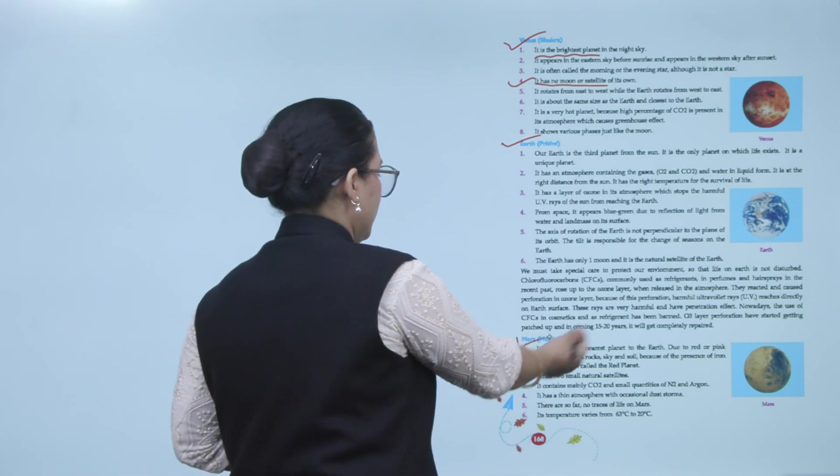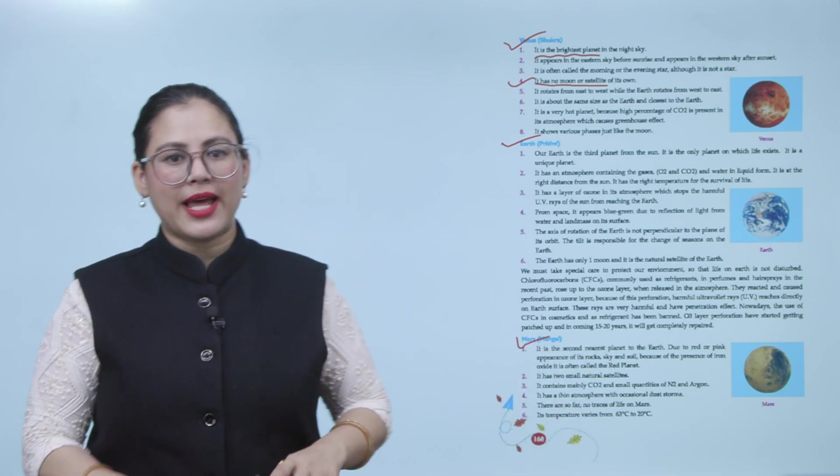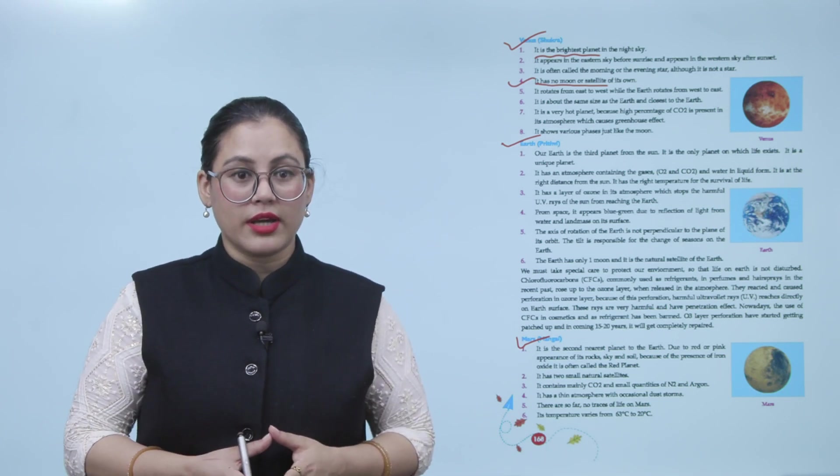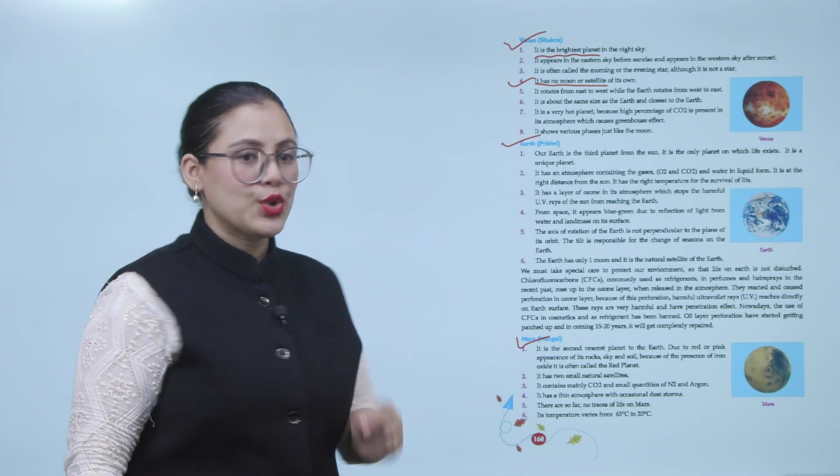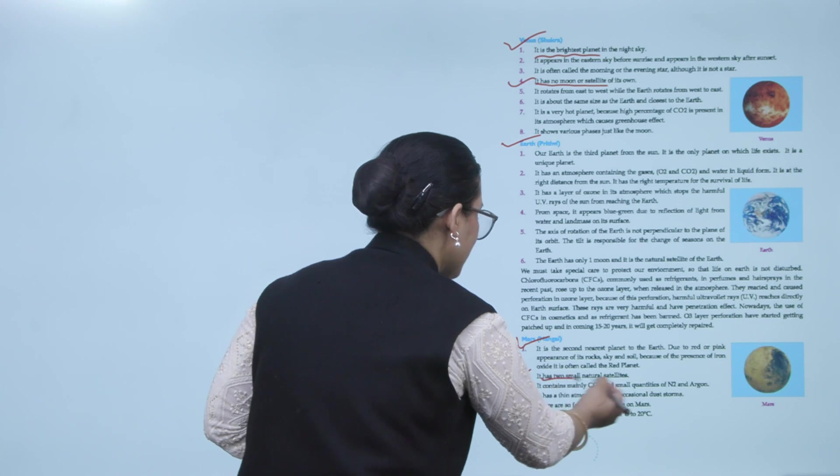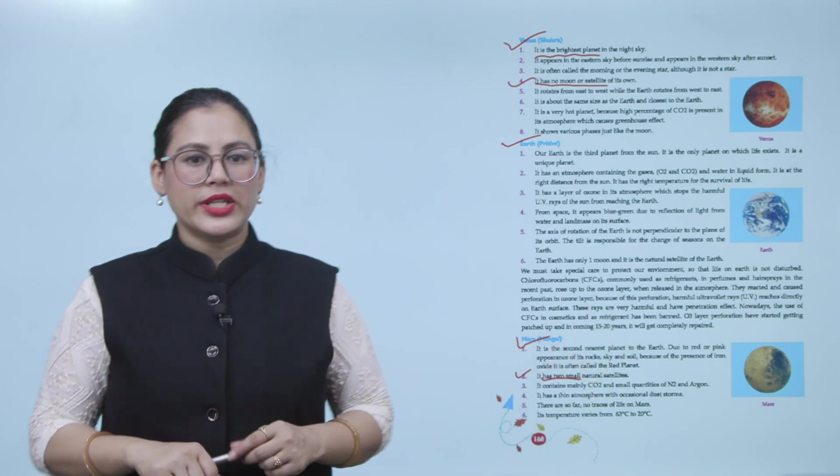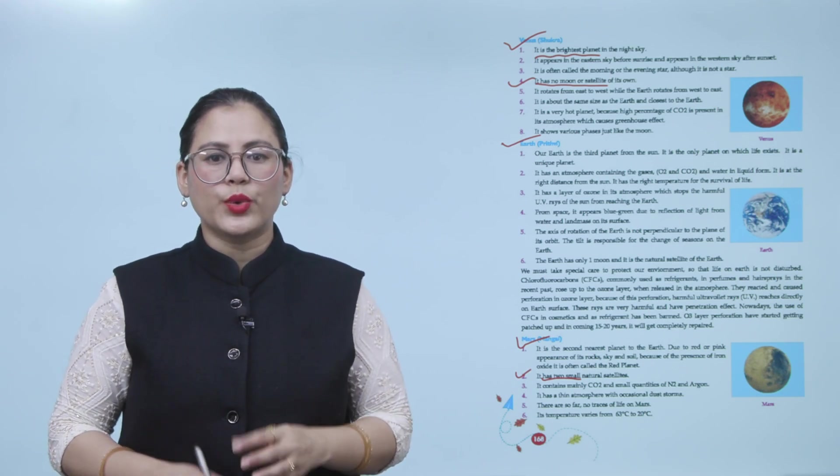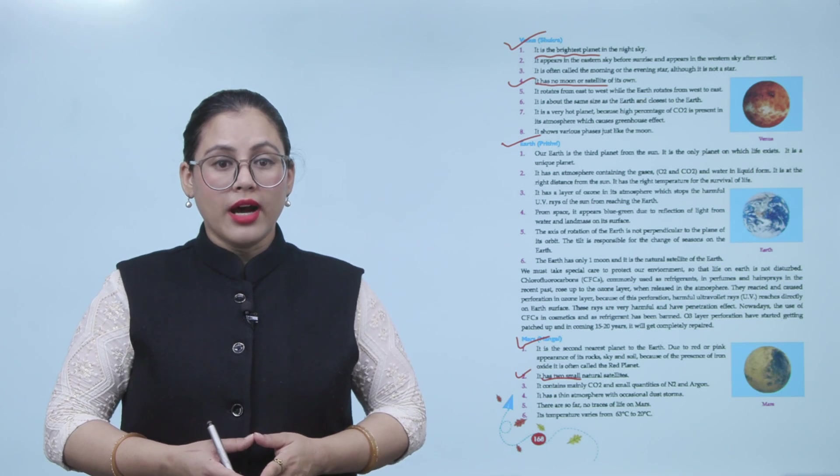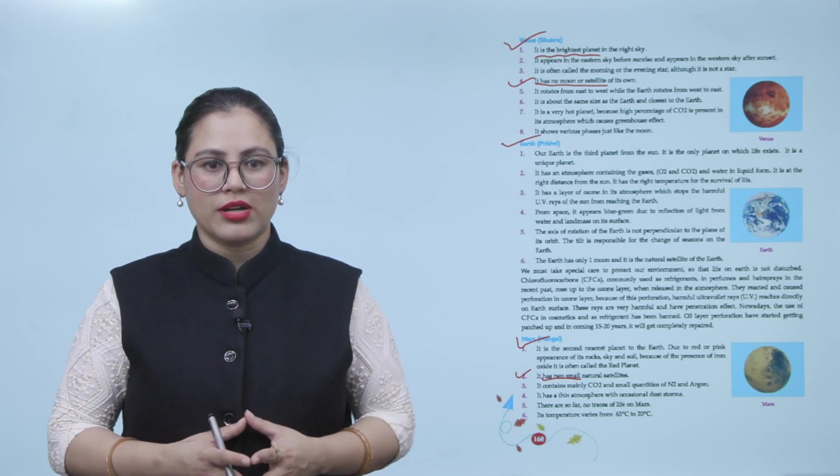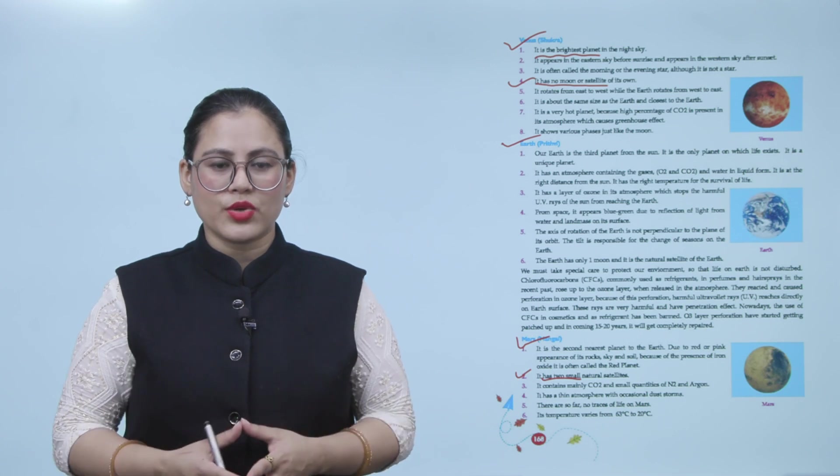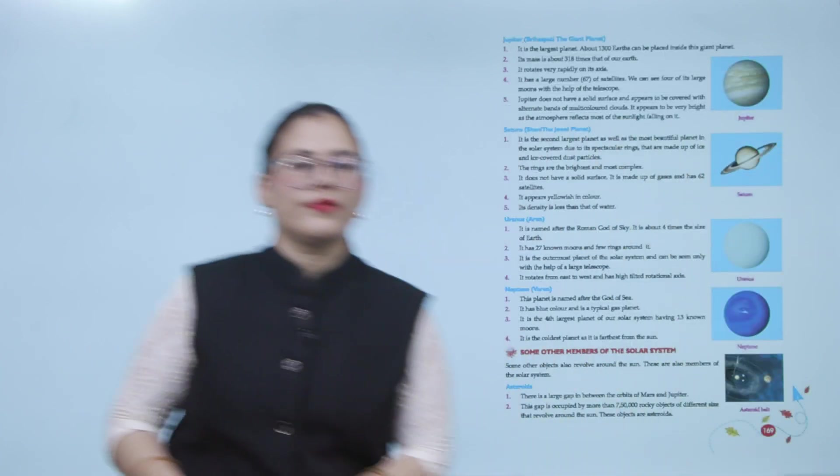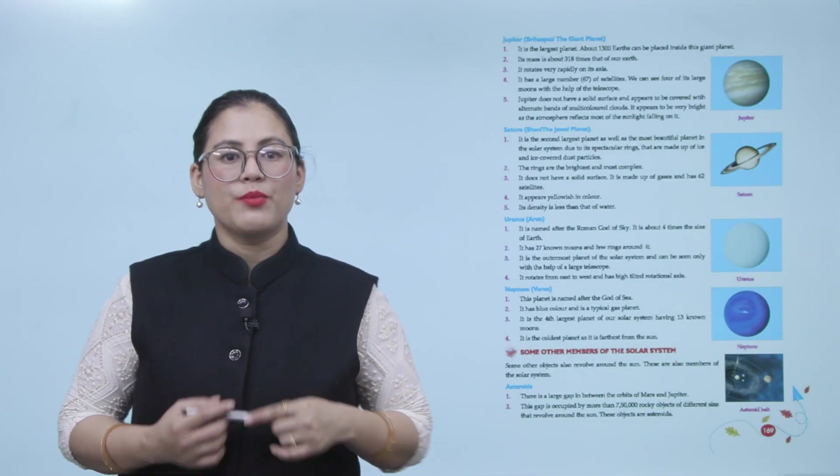Mars, or Mangal. It is the second nearest planet to the earth. Due to red or pink appearance of its rock, sky, and soil because of iron oxide, it is often called the red planet. It has two small natural satellites, means it has two moons. Number three: It contains mainly carbon dioxide and small quantities of nitrogen and argon. It has a thin atmosphere with occasional dust storms. Number five: There are so far no traces of life on Mars. And number six: Its temperature varies from minus 63 degrees Celsius to 20 degrees Celsius.